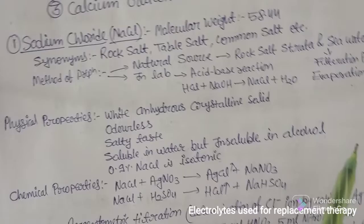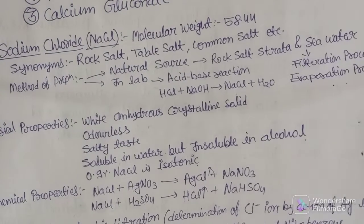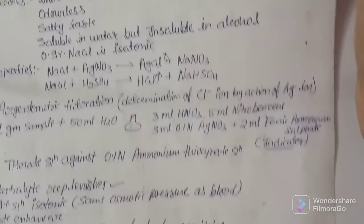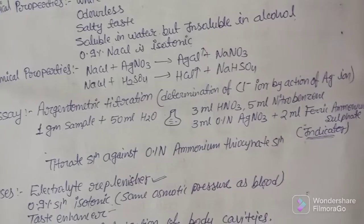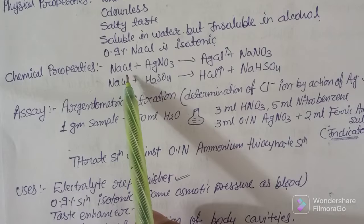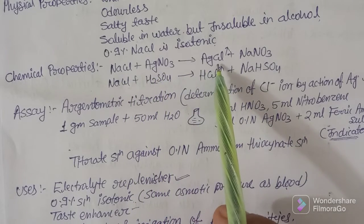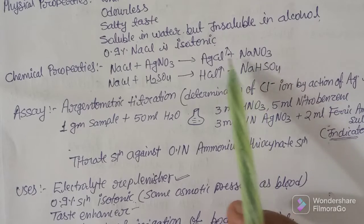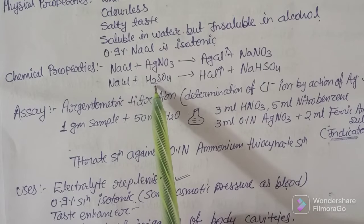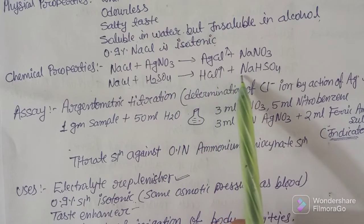Coming to chemical properties of sodium chloride: sodium chloride will react with silver nitrate to form silver chloride and sodium nitrate. Another reaction is that it can also react with sulfuric acid (H₂SO₄) to form hydrochloric acid gas and sodium bisulfate.